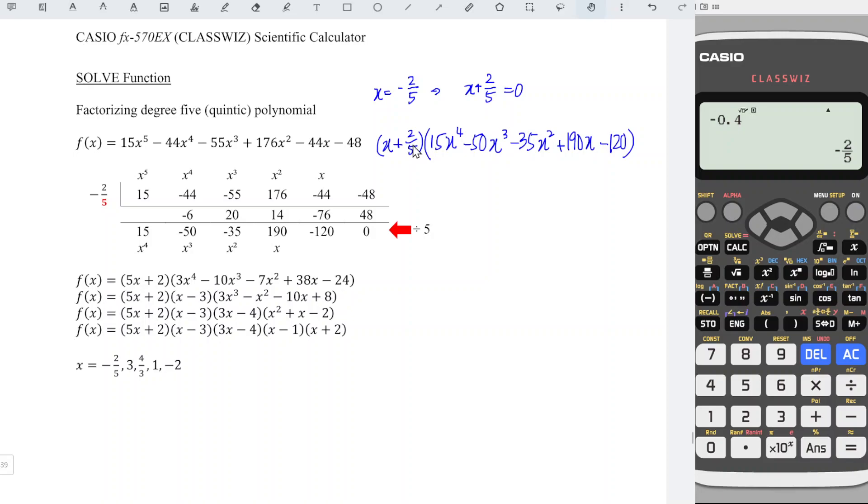We need 2 times a 5, so which means that we have to factorize 5 from this degree 4 polynomial, and we should obtain 3x to the power of 4 minus 10x cubed minus 7x squared plus 38x minus 24. Then we just have to times this 5 to the factor, and we should obtain 5x plus 2. And this is how we obtain the factor 5x plus 2.